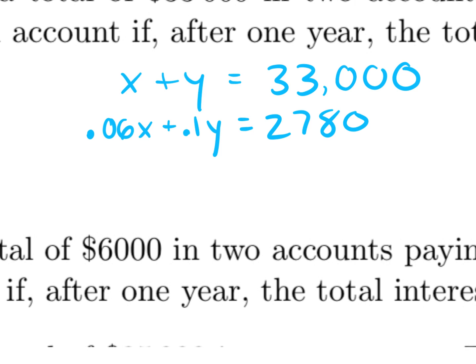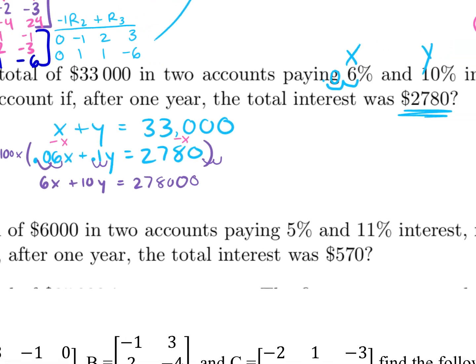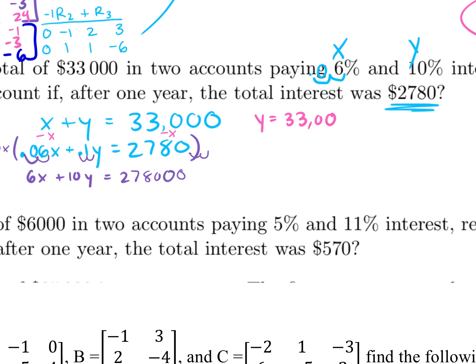Since we don't have a calculator on the test, multiply the second equation by ten to get nicer whole numbers: six x plus ten y equals twenty-seven thousand eight hundred. You could also multiply by a hundred to clear all decimals — I moved everything two decimal places. You can then subtract x over so y equals thirty-three thousand minus x.